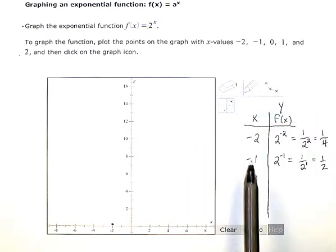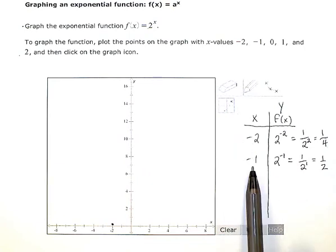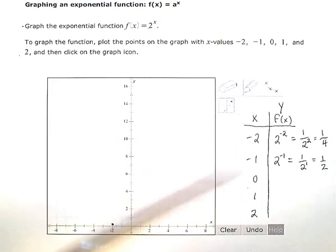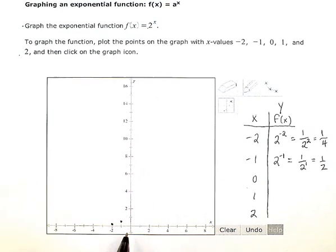Using your plot point tool here, you're going to type in negative 1, positive 1 half, and it'll put a little dot about right there.